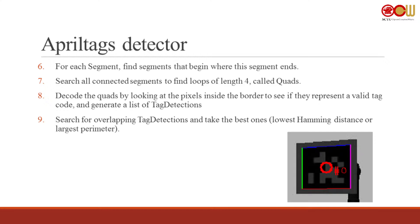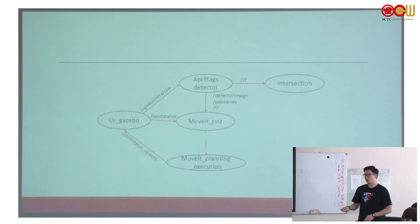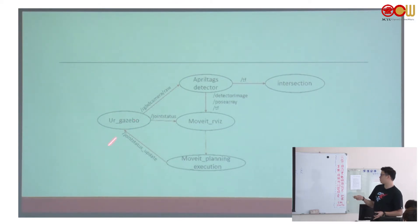This is the whole plan of our system. First, URGazebo, so AprilTag subscribes the image from it. RViz reads the joint status and TF, which is the main part. Then I'm using MoveIt planning and execution, so I can actually move the robot from RViz and the Gazebo robot can actually move.